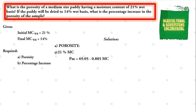There is another formula if what is given is a long-sized patty. Now, we already have the value of the moisture content to be 21%. We simply substitute the values and we have: porosity is equal to 69.05 minus 0.885, multiplied by the moisture content of 21%, converted to decimal of 0.21. We simply solve and we have a final value for the porosity of the initial moisture content to be 68.86%.